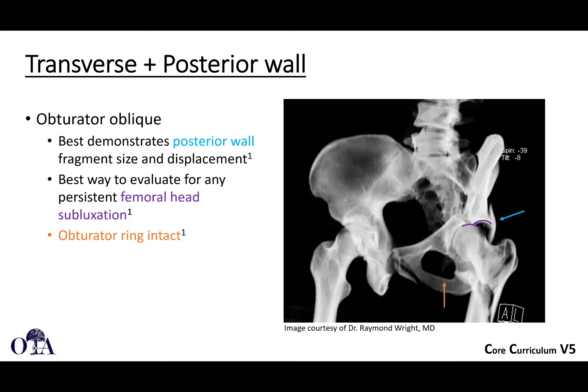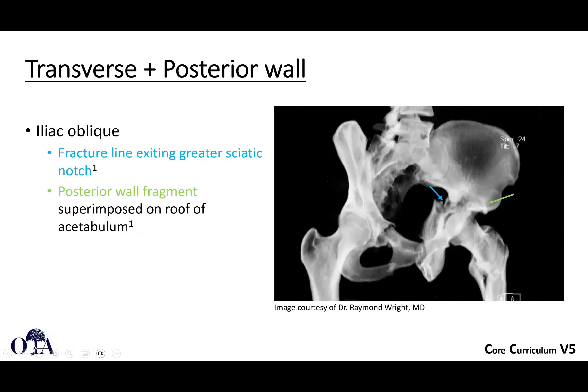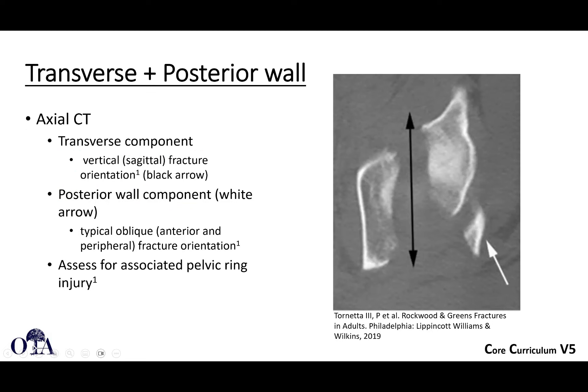The obturator oblique will show posterior wall fragment size and displacement. You can see femoral head subluxation, and you'll notice that the obturator ring is intact. The iliac oblique is going to show the transverse fracture component disrupting the ilio-ischial line, exiting the greater sciatic notch. The posterior wall fragment may not be well seen here — it's usually superimposed on the roof. On CT scan, you're going to see the posterior wall fracture and possibly a vertical fracture orientation. It's sometimes hard to get a good look at the transverse component on axial CT because the fracture line can be in plane with your axial slices depending on pelvic tilt.